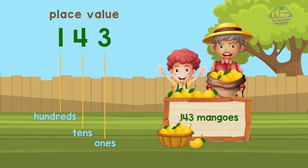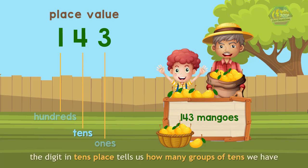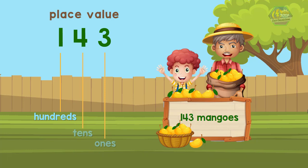For the number 143, the digit 3 is in the ones place, 4 is in the tens place, and 1 is in the hundreds place. The digit in the ones place tells us how many ones we have, the digit in the tens place tells us how many groups of tens we have, and the digit in the hundreds place tells us how many groups of hundreds we have.